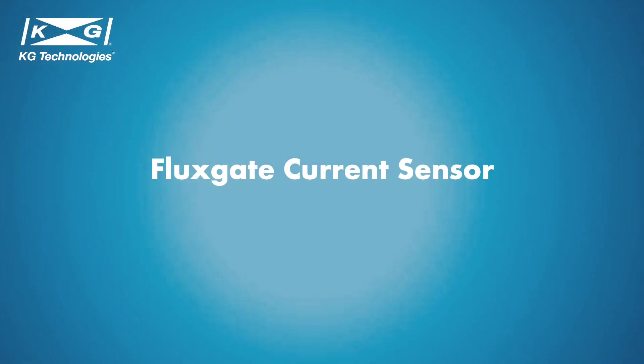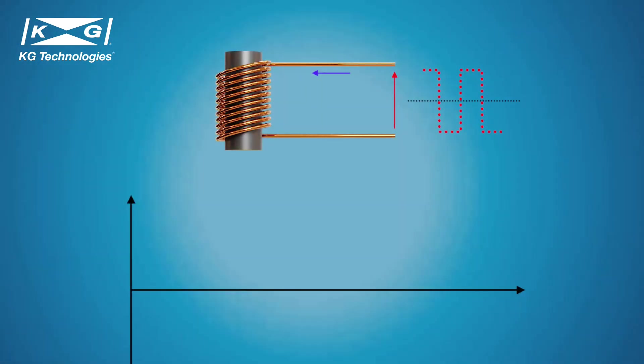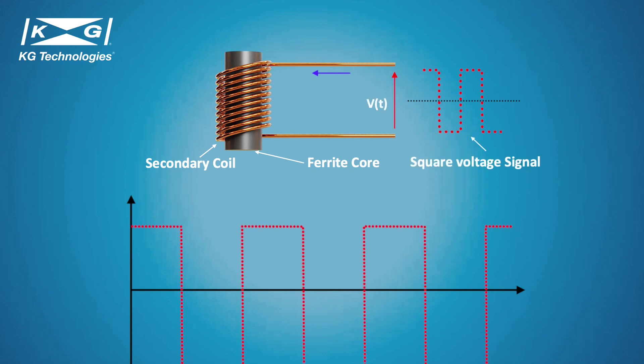Another type of current sensor is fluxgate current sensor. For single-core fluxgate current sensor, it contains a ferrite core and a secondary coil. If we apply a square voltage signal to the secondary coil, the current will look like in the graph due to saturation and desaturation.